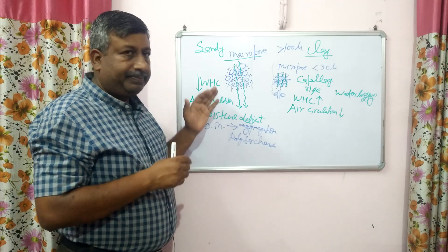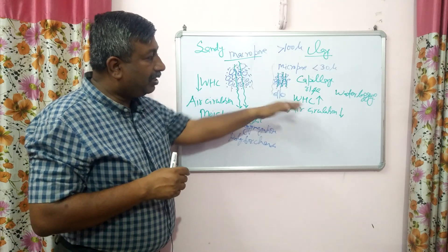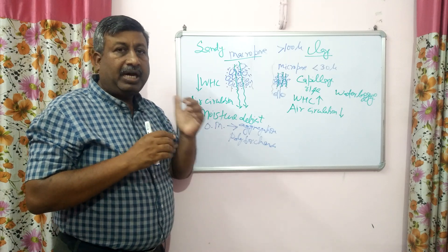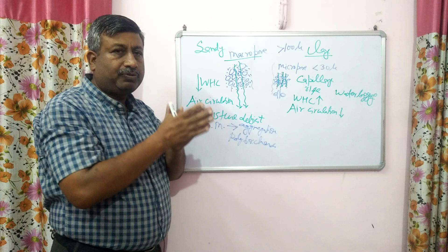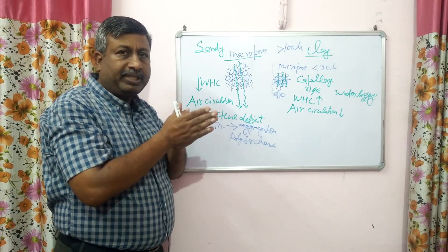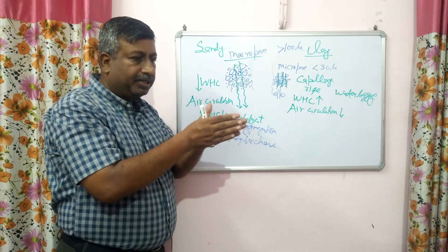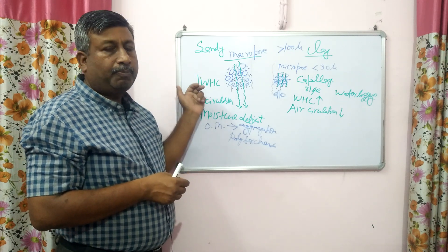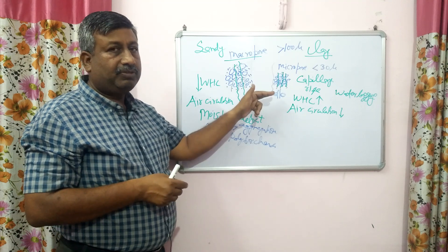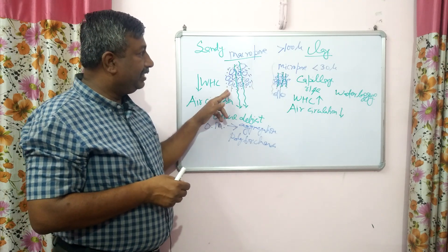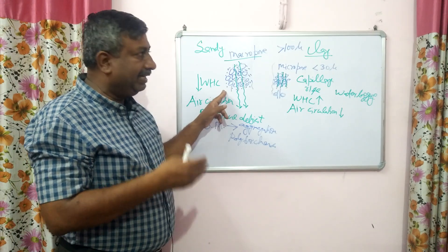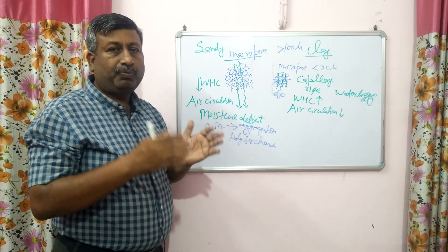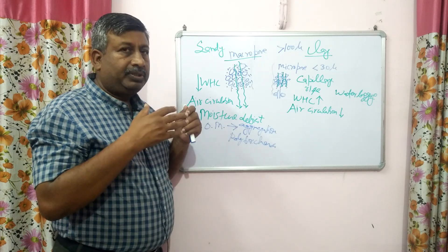Overall, when we add organic matter to sandy soil or clay soil, soil physical properties — meaning water holding capacity and air circulation — both are improved. Water holding capacity increases in case of sandy soil and water logging problem decreases in clay soil. When organic matter is added to sandy soil, macropores decrease and micropores increase, while in clay soil, macropores increase and micropores decrease.